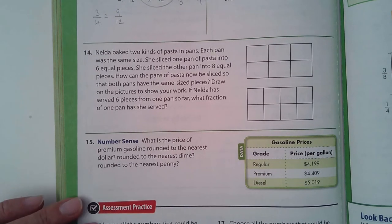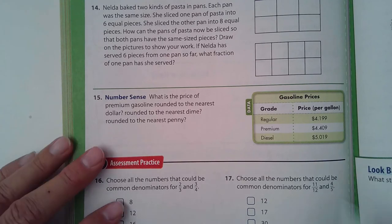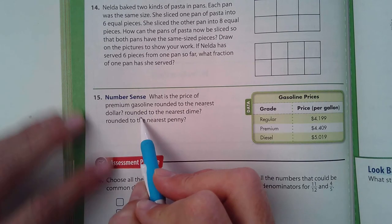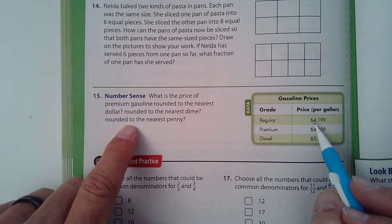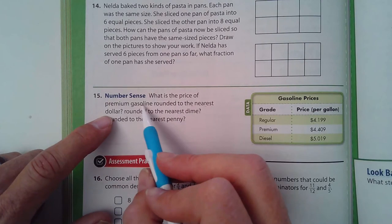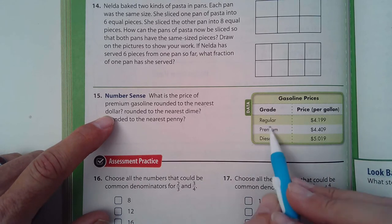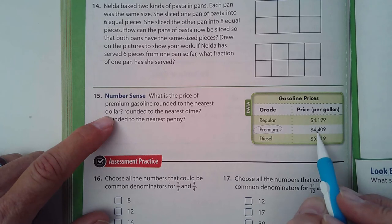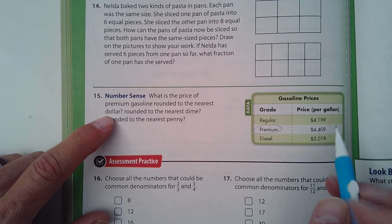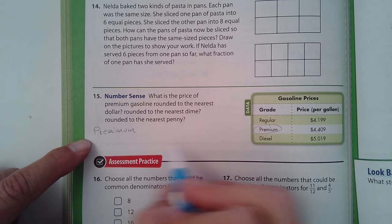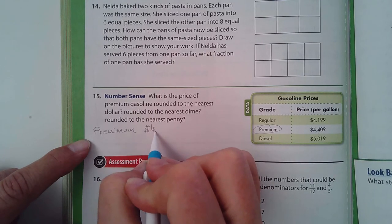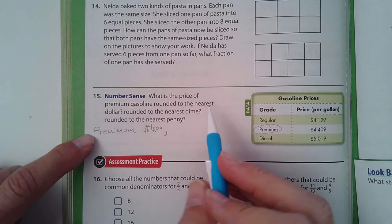Try number fourteen on your own. Looking at number fifteen, number sense: what is the price of premium gasoline rounded to the nearest dollar? So the nearest whole dollar, that's going to be the ones place. Rounded to the nearest dime, oh, so we're going to do several kinds of rounding here. So first, what is the price of premium gasoline rounded to the nearest dollar? Is the next number to the right, which is just the first number after the decimal, is that a five or larger? No, so premium, the first one would be rounded to the nearest dollar would be four dollars.